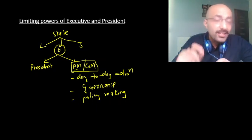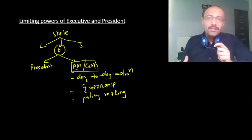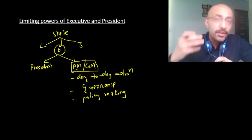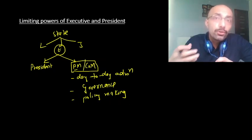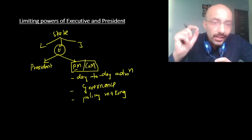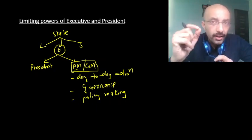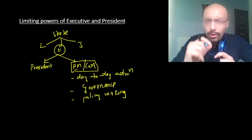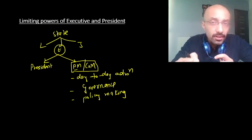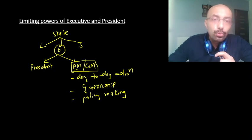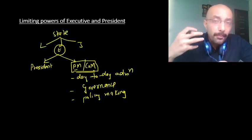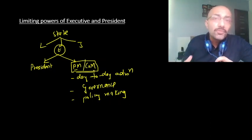However, there was again a fear. It was very natural for Indians to be suspicious of the executive, because we had been ruled for a long time by an unaccountable British government — we became victims of an autocratic executive. So our Constitution makers wanted an executive which would be stable and powerful so India could move towards development, yet they were suspicious that the PM and ministers might try to concentrate powers and behave in an autocratic, dictatorial manner.